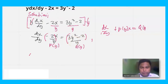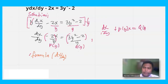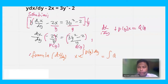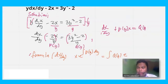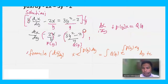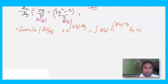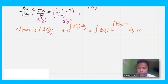For linear equations, we have a formula. The formula for linear in x is: x times e raised to the integral of p(y) dy equals the integral of q(y) times e raised to the integral of p(y) dy, all times dy plus c. It's a very long formula, but let's do this in a simpler form.